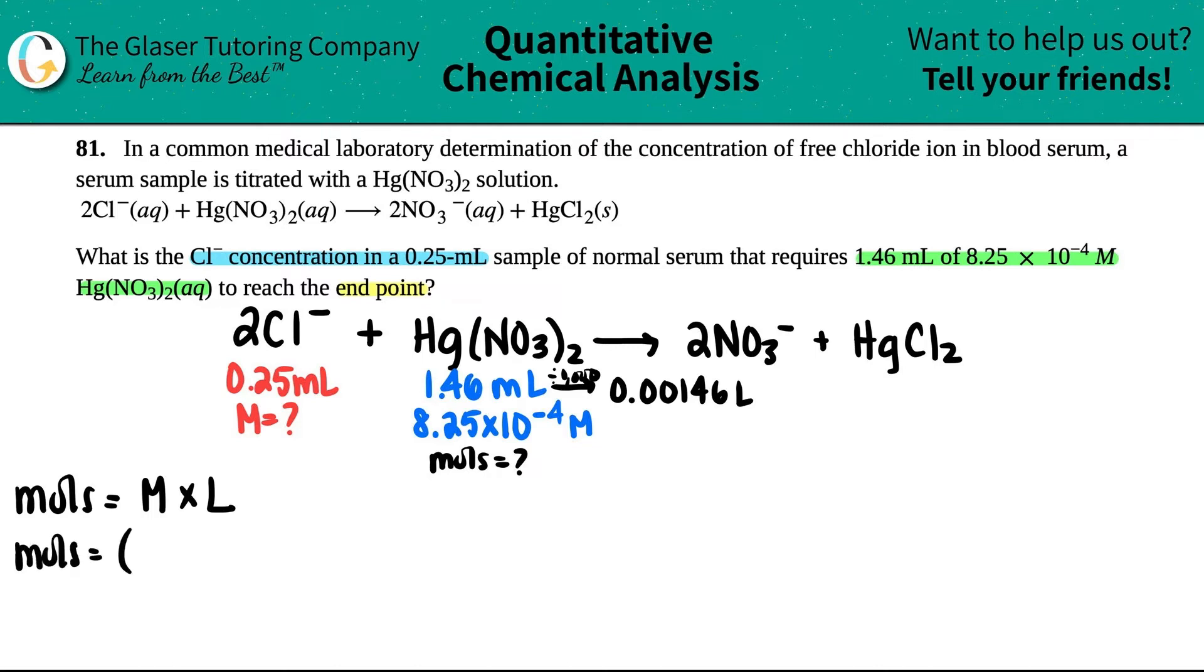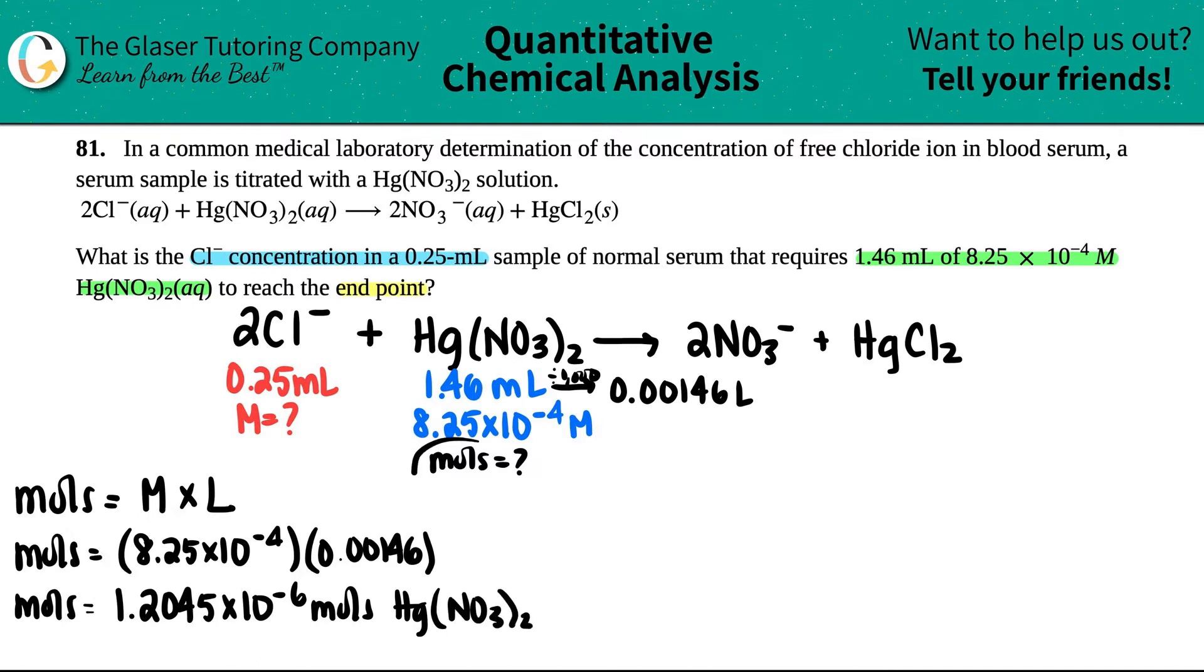So moles - the molarity is 8.25 times 10 to the negative fourth, and my liter is 0.00146. Let's find those moles out. Times that by 8.25. I won't round this number because this is not the answer. So 1.2045 times 10 to the negative sixth moles of the Hg(NO₃)₂. Now I know the moles of this compound.